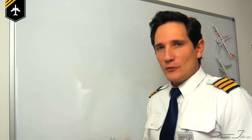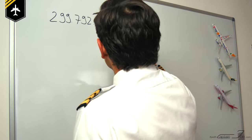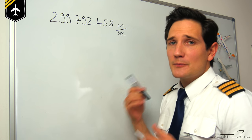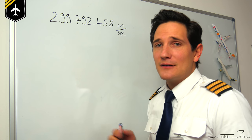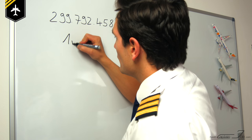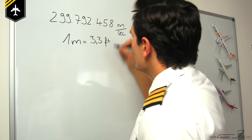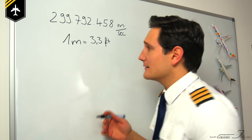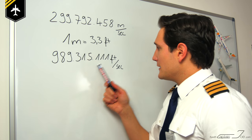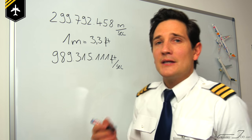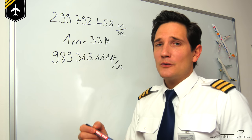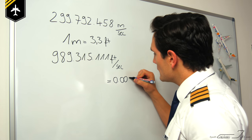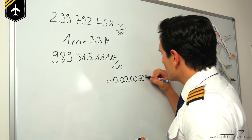Now let's look at the speed of light, which is normally given in meters per second. It travels at 299,792,455 meters per second. In aviation, most measurements are given in feet, so that is a fairly simple calculation: one meter equals 3.3 feet, meaning you just multiply by 3.3 to get the speed of light in feet per second. Now let's say the radio altimeter has measured the time from one radio wave transmitting downwards, getting reflected, and getting picked up again by the receiving antenna, and the time it took is 0.0000005 seconds.